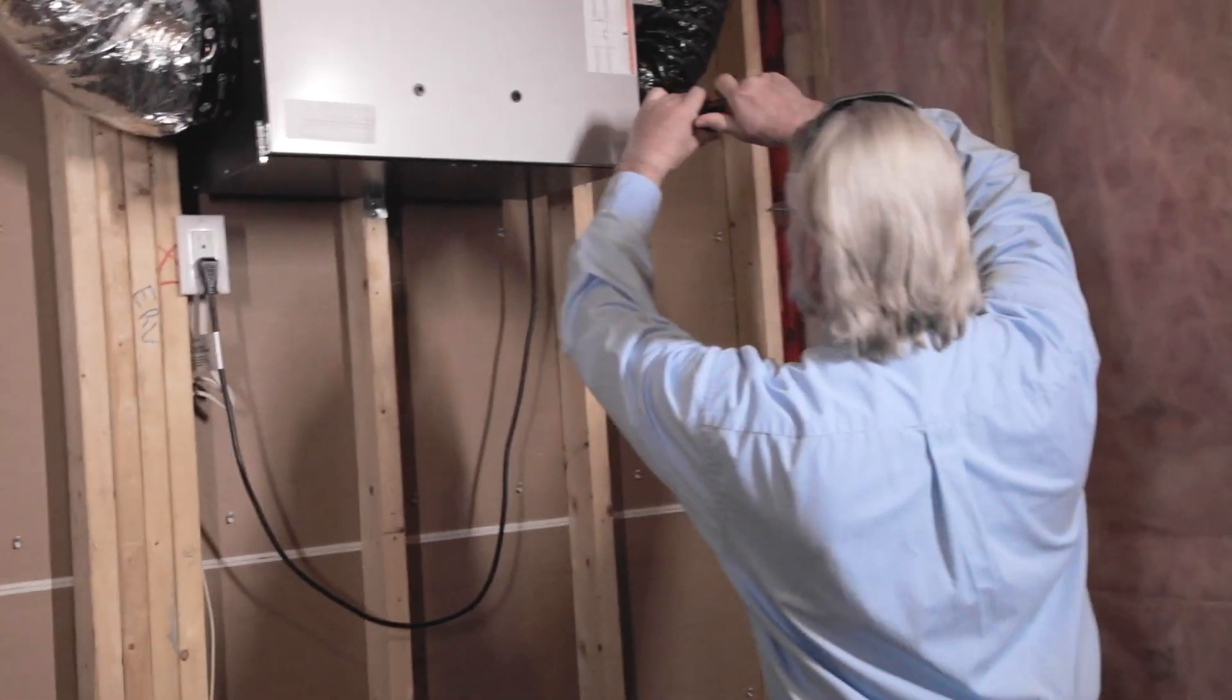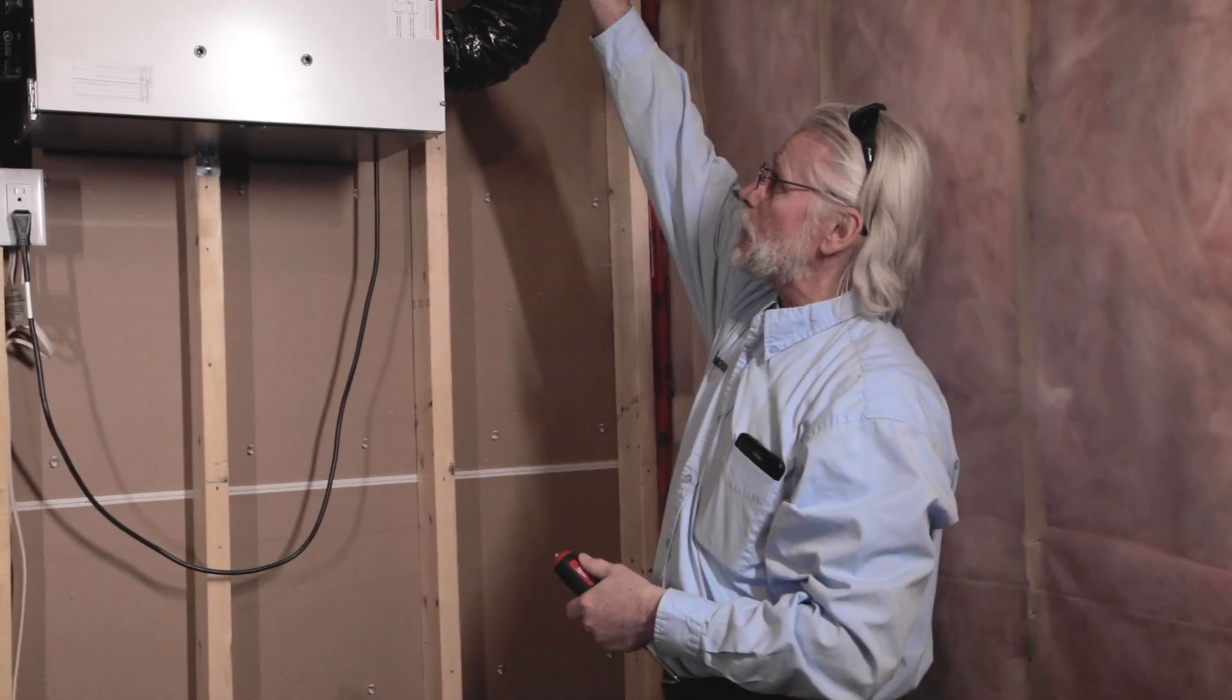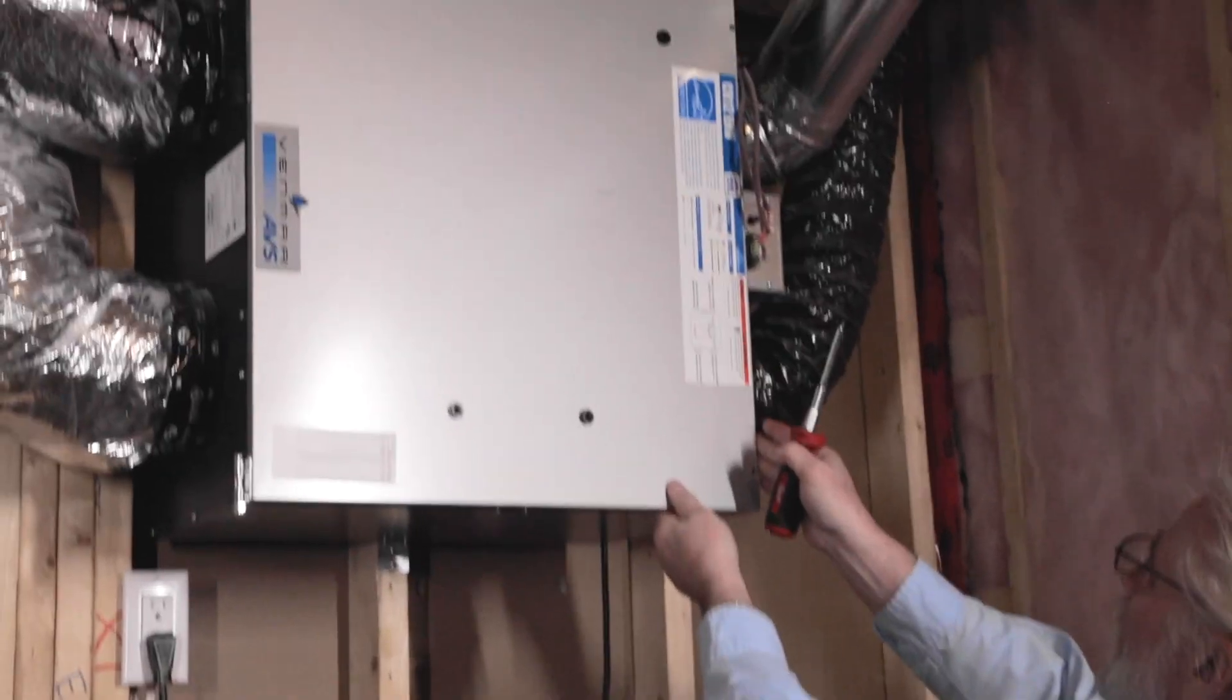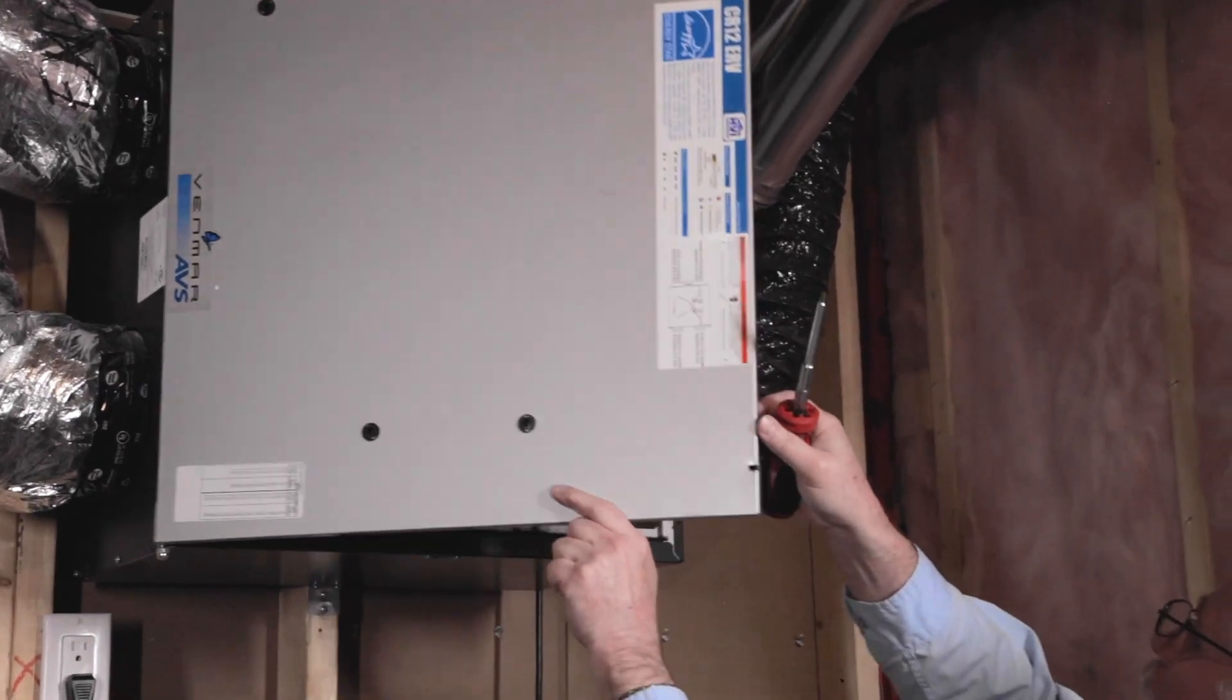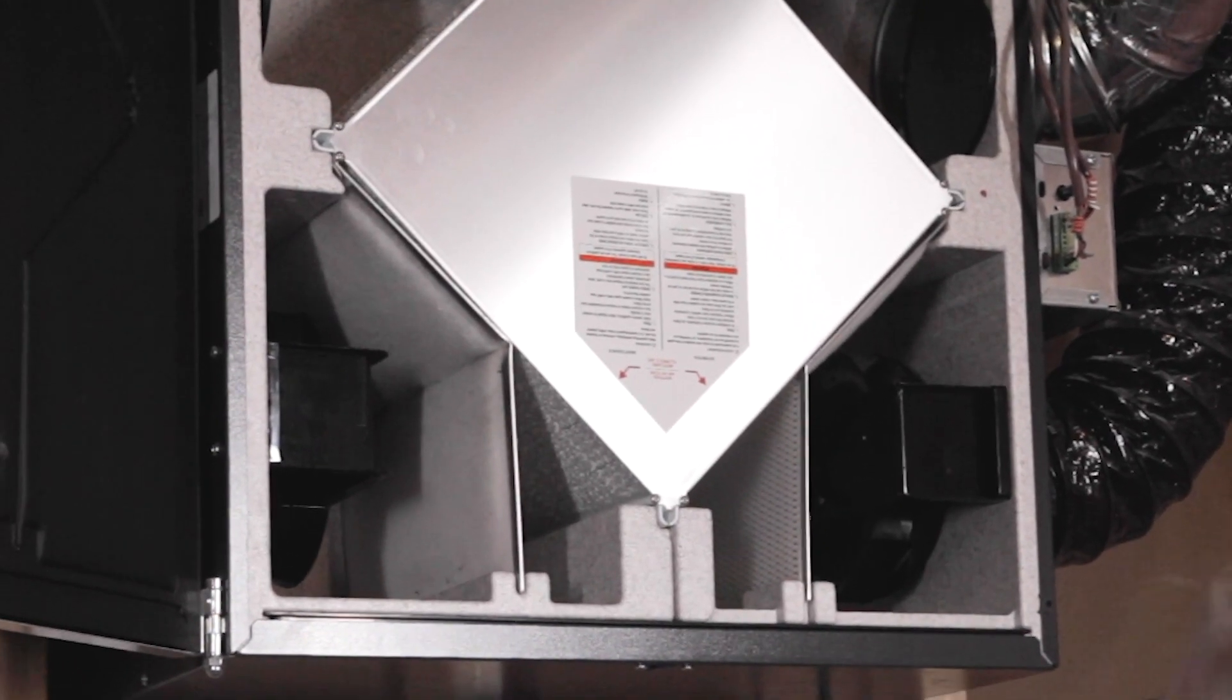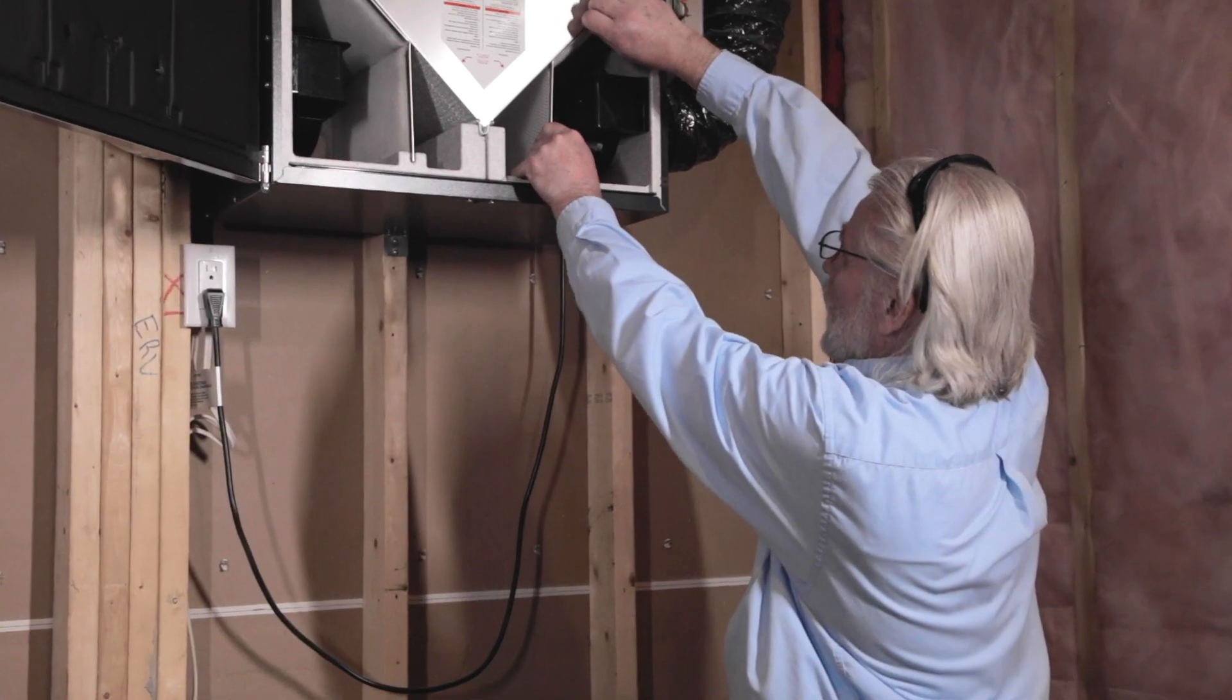So this one here actually has a few screws. You're going to see other types that they actually just have a little clip that you can undo and open up the door. This one just takes a little bit more effort. So this basically just has a door on it which we can open up. This is the main system of the ERV. There's not a lot of moving parts. The only moving parts here is we have fans. These components here are our air filters.